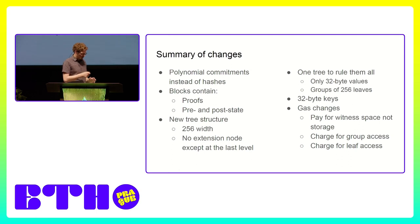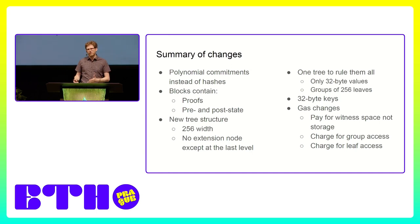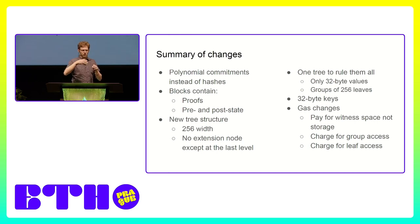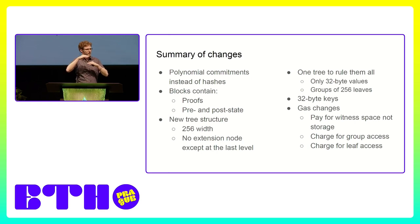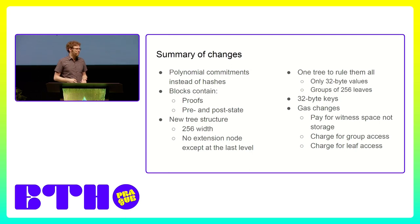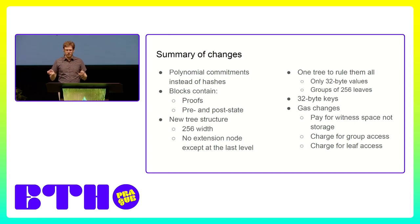A quick summary of changes: we replace hashes with a type of commitment called a polynomial commitment, we add the proofs to the block — all the data you need to verify the block — and because the number of siblings no longer affects you, we increase the branching factor to 256. That makes for a much more shallow tree, which means the path also becomes shorter and the proof gets smaller. Another big difference is that instead of differentiating accounts from contract storage, the tree becomes agnostic — all it sees is 32-byte values.